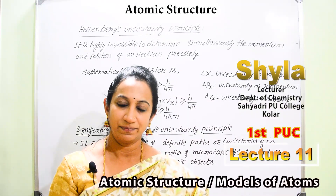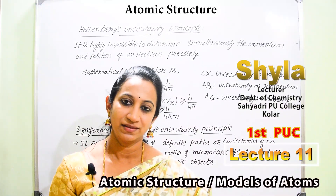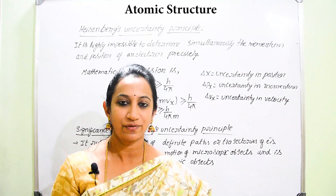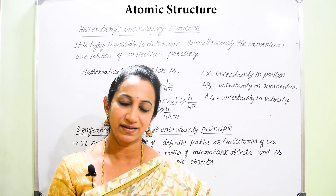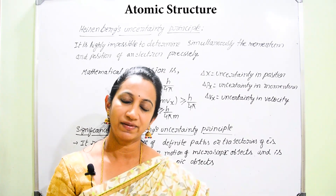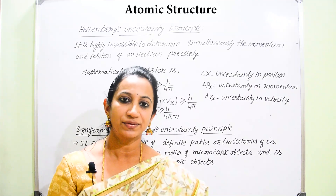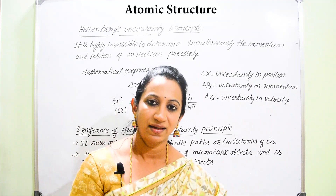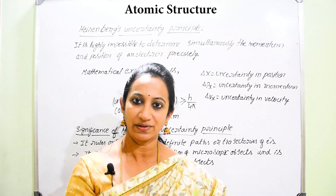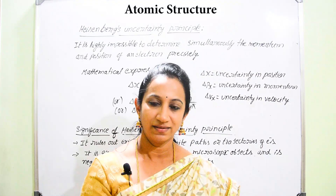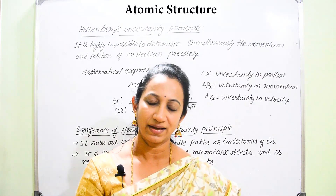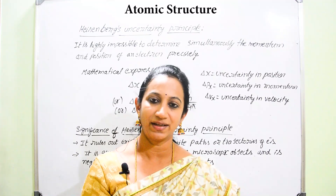In the previous video we got to know that the electron will be acting as both a particle and a wave. The next topic regards Heisenberg's uncertainty principle, which explains whether it is possible to detect the exact position as well as the velocity of a moving object, particularly an electron. There will be different particles having movement, either microscopic or macroscopic in nature.